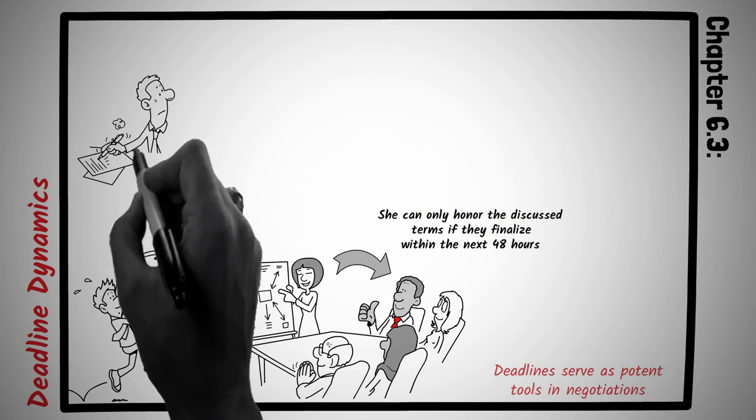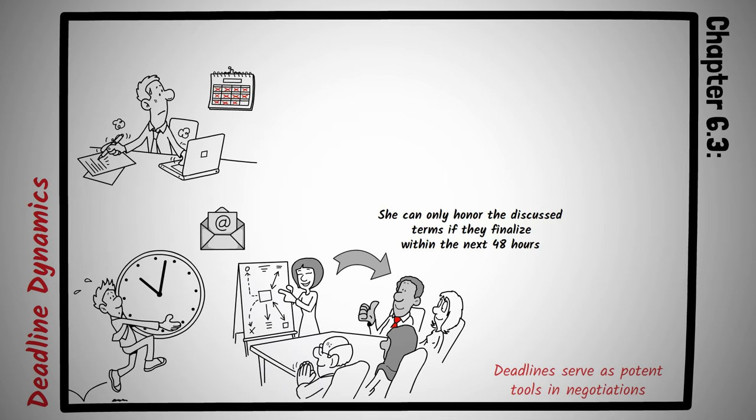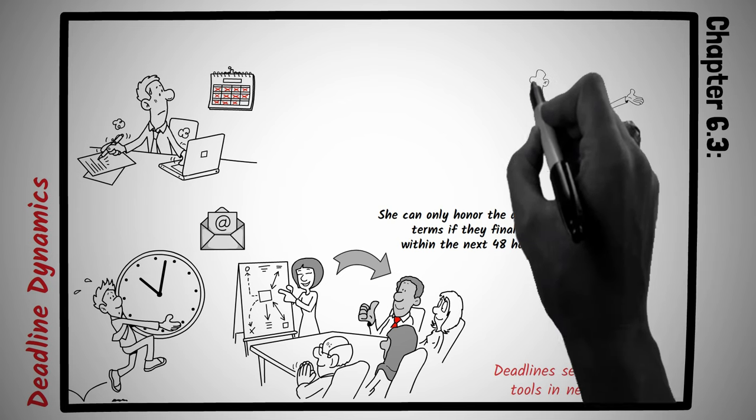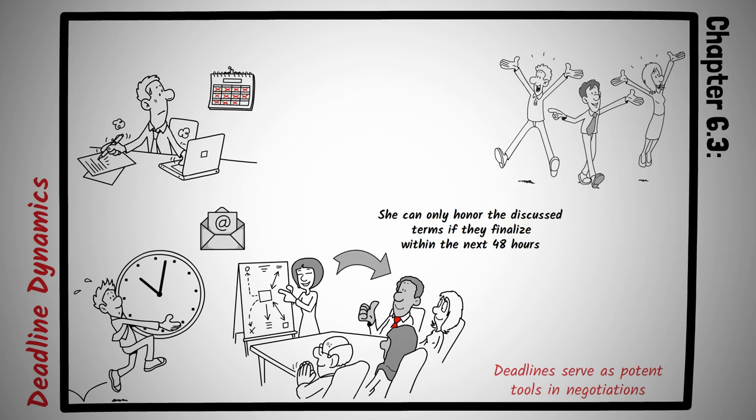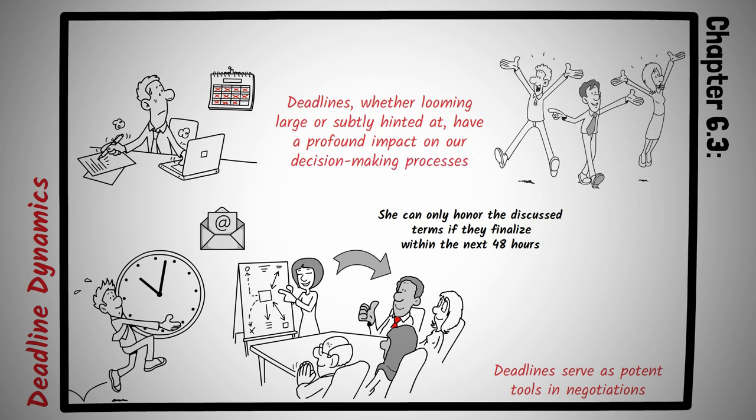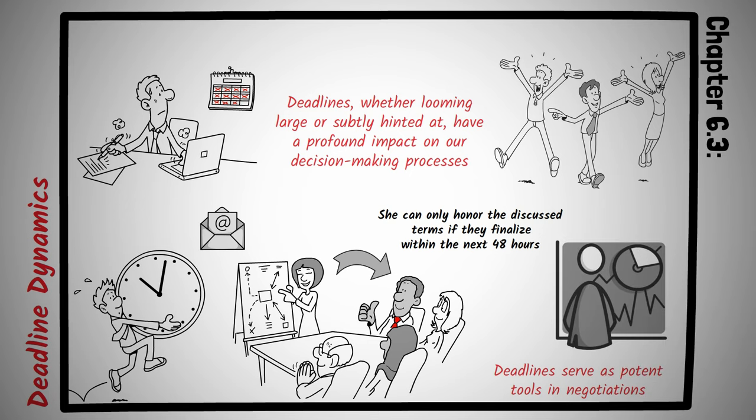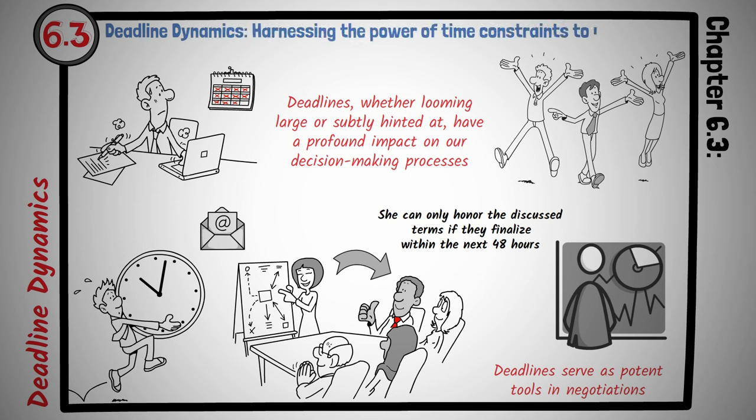Ever noticed how productivity surges right before an assignment's deadline? That's the power of deadline dynamics in action. When planning a group vacation, if decisions about dates and destinations are dragging, set a soft deadline. Tell the group that flight prices are expected to rise after the weekend, so decisions need to be finalized soon. This often catalyzes discussions, and decisions are made quicker. Deadlines, whether looming large or subtly hinted at, have a profound impact on our decision-making processes. They instill a sense of urgency, pushing us to act, decide, and sometimes even concede. By understanding the dynamics of deadlines, one can maneuver through negotiations with a unique advantage, ensuring discussions progress with purpose. Principle number 6.3 is deadline dynamics, harnessing the power of time constraints to instill urgency.